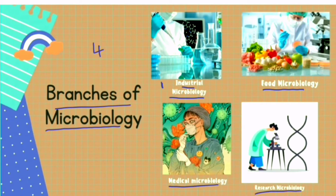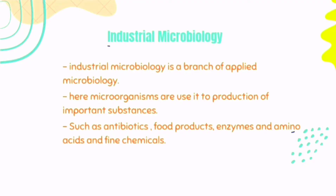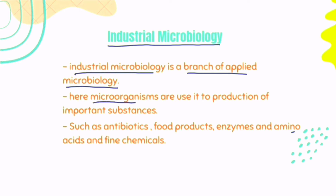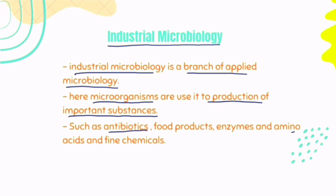First, industrial microbiology. Industrial microbiology is a branch of applied microbiology where microorganisms are used for the production of important substances such as antibiotics, food products, enzymes, amino acids, and fine chemicals.